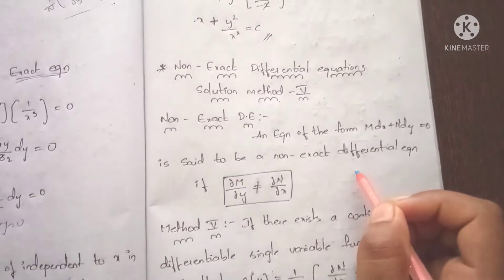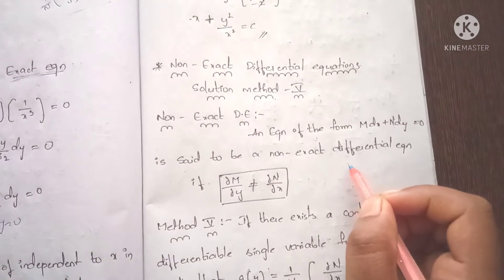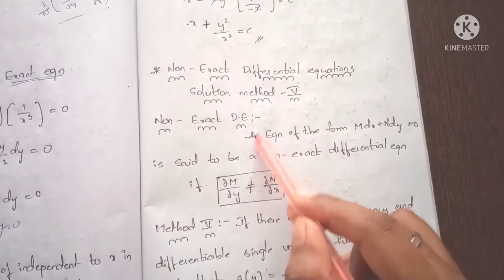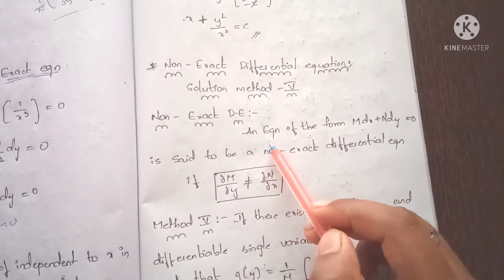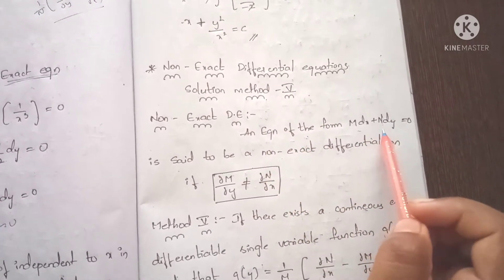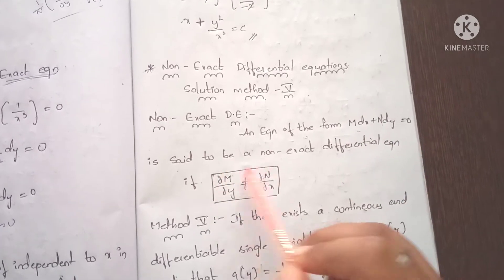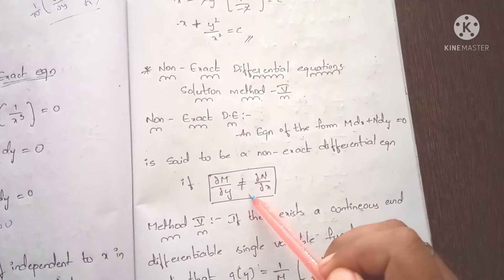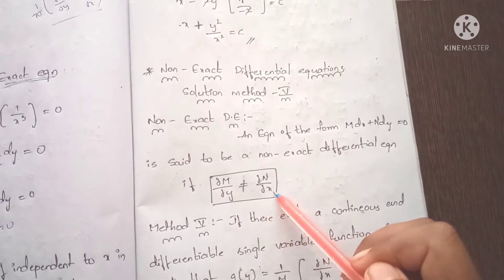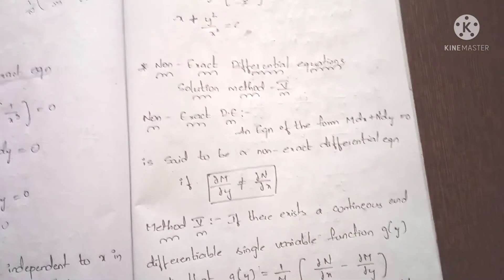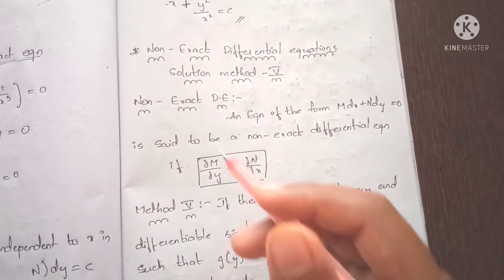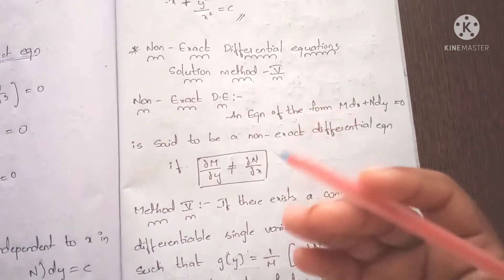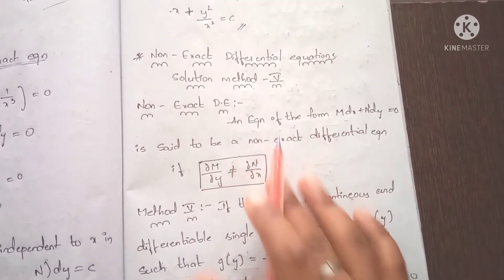Hi friends, here is a topic which is non-exact differential equation, method 5. The equation of the form Mdx plus Ndy equals to 0 is said to be a non-exact differential equation if dou M by dou y is not equal to dou N by dou x. So this is a non-exact differential equation, and there are 5 key solution methods.